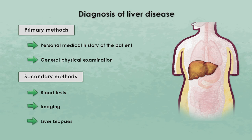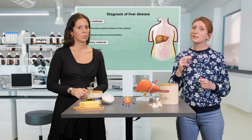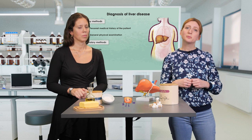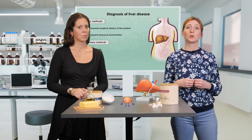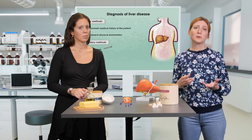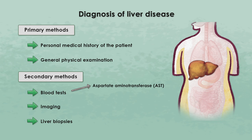During the blood tests, specific parameters associated with liver function are monitored in the blood. The most common ones are two enzymes produced by the liver: aspartate aminotransferase, AST, and alanine aminotransferase, ALT.